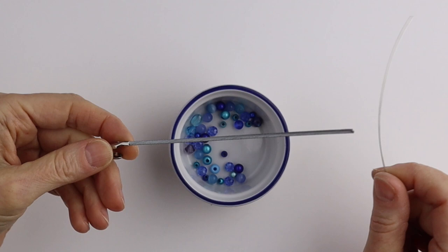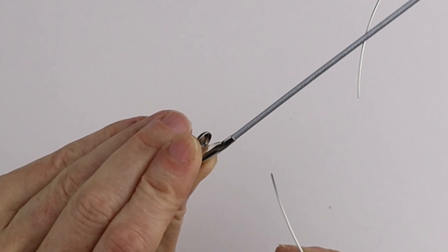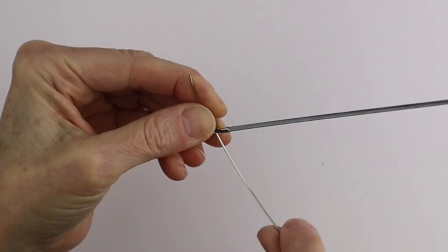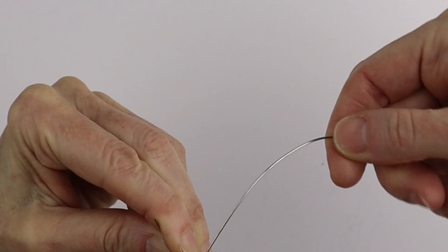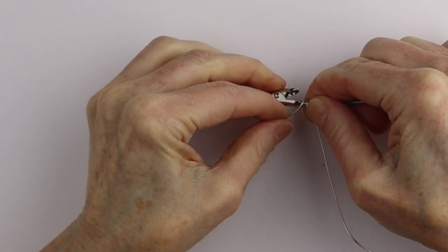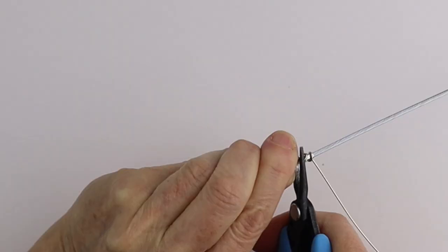For the second one we're going to use 20 gauge wire and a variety of beads. We'll start by attaching the wire to the end. You can put it through the hole and then wind this around a couple of times.